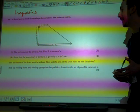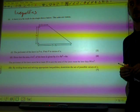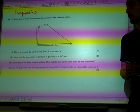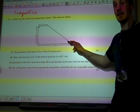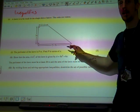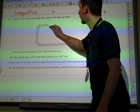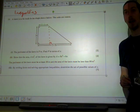The perimeter of the lawn is P. Find P in terms of X. Well, it looks like we've got three sides, so we need to know the length of this side here. I'm thinking we've got a little right-angled triangle in there.